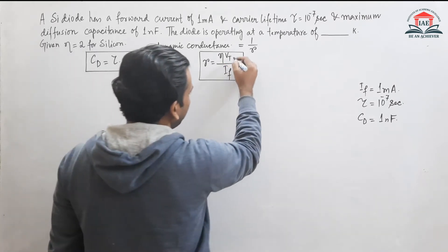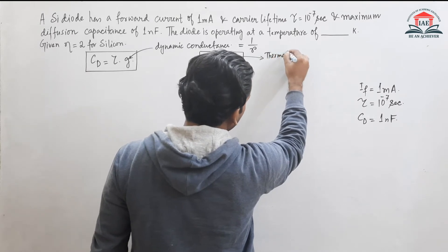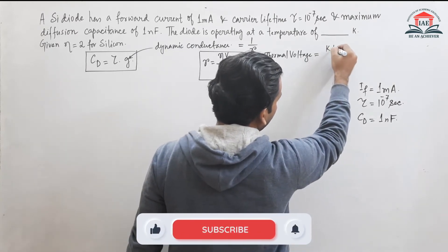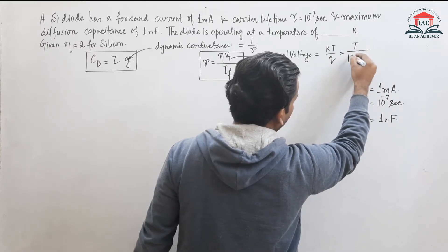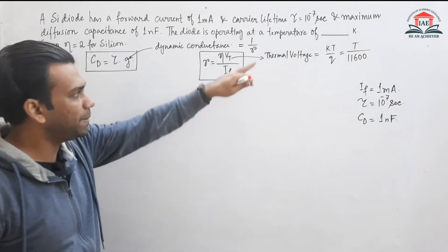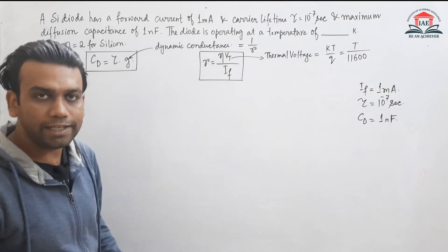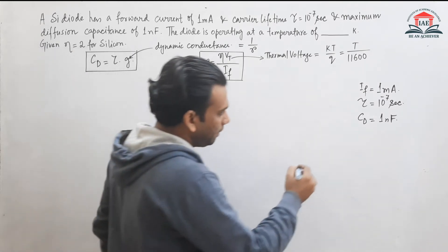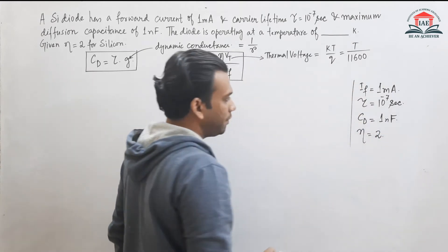Now, Vt is the thermal voltage, given by KT/Q, which can also be written as T divided by 11600, where T is the temperature in Kelvin. The ideality factor eta for silicon is given here as 2.